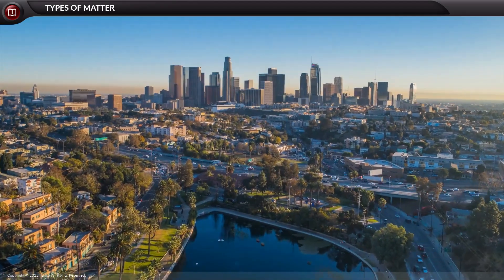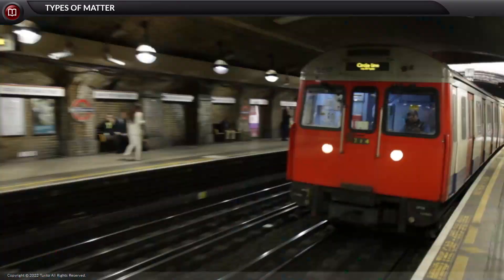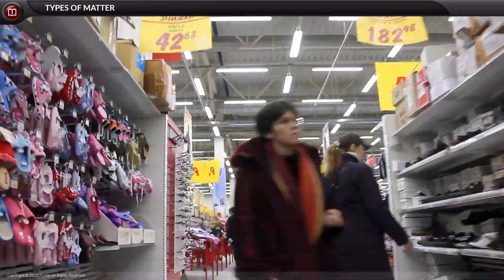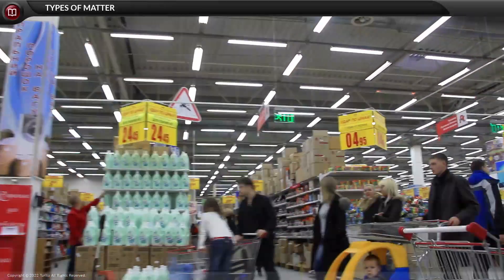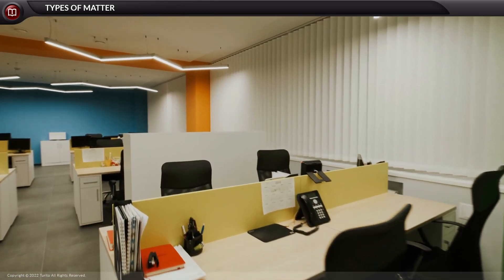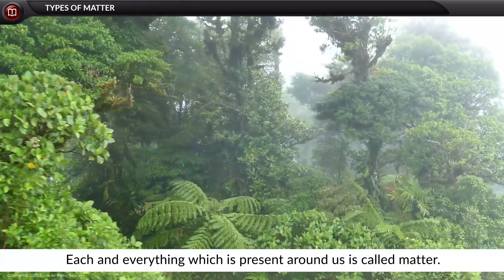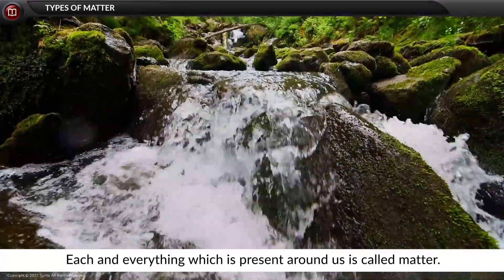In our daily life we come across many sorts of things. Have you ever wondered what all this is called and how can we classify them? In this video, let us understand our surroundings. Each and everything which is present around us is called matter, and yes, we can classify them.